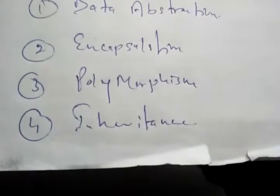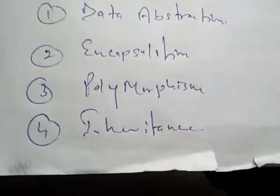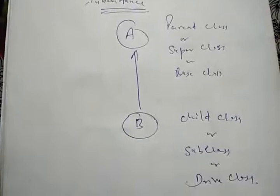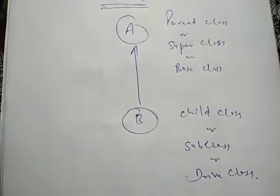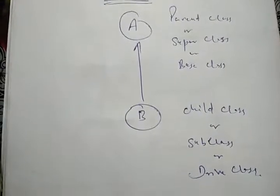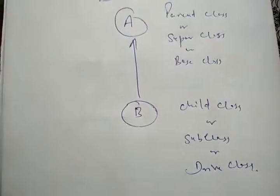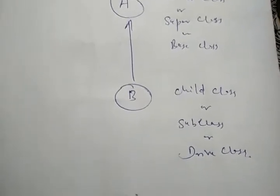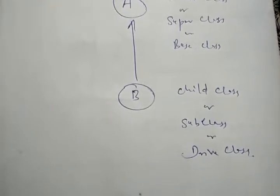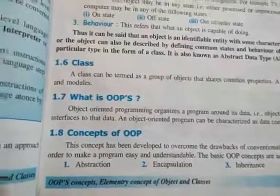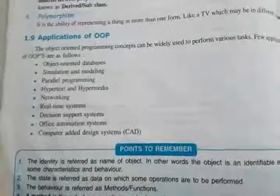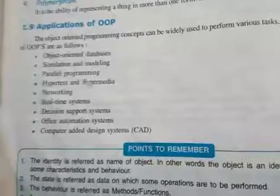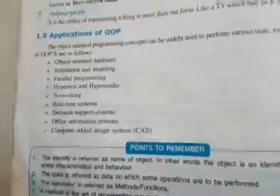The last OOP concept is inheritance. Inheritance is used to inherit the properties of one class into another class. In the diagram, class B inherits data from class A. So A is called the parent class, super class, or base class — the class that provides data to the derived class. B is called the child class, subclass, or derived class because it is created with the help of class A. OOP is used in areas such as object-oriented databases, parallel programming, networking, real-time systems, office automation, and computer-aided design.